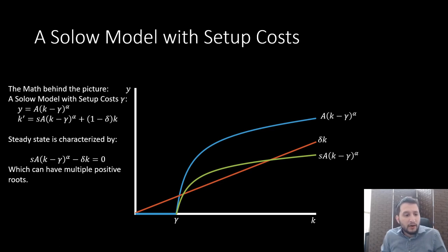But if you look at our steady state, that's going to be where k is equal to k prime, k prime being the capital stock in the next period. We're going to get this result and this allows for multiple positive roots that we have in this equation.